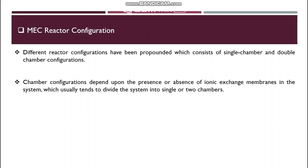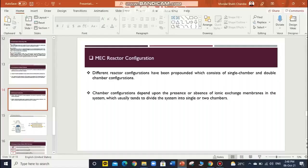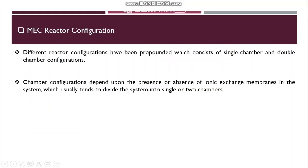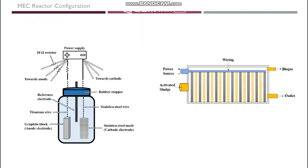The configuration of the chamber in microbial electrolysis cells plays a vital role in the selection of the process to produce methane. The reactor design directly influences methane production, energy efficiency, and capital costs. Different reactor configurations have been proposed, consisting of single chamber and double chamber configurations. Various chamber configurations depend upon the presence or absence of ionic exchange membranes, which tend to divide the system into single or two chambers. Single-chambered microbial electrolysis cells are developed by detaching membranes from double-chambered systems, so the anode and cathode remain in the same solution.